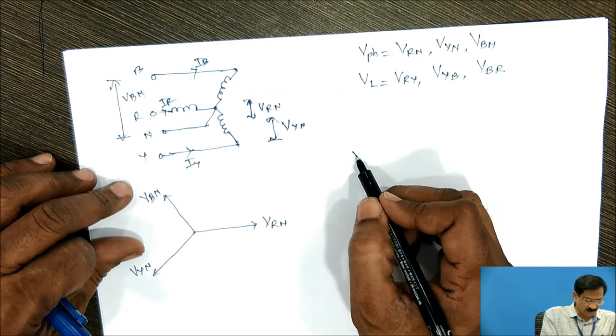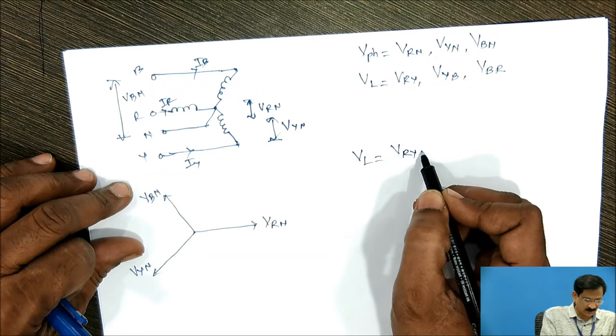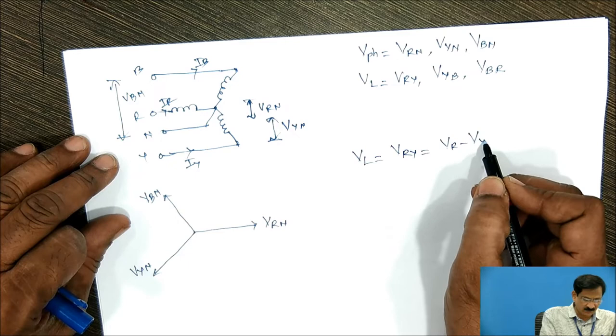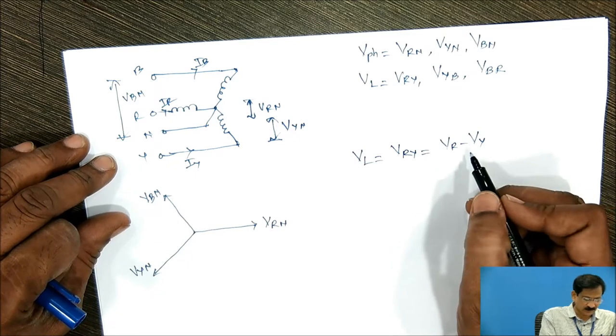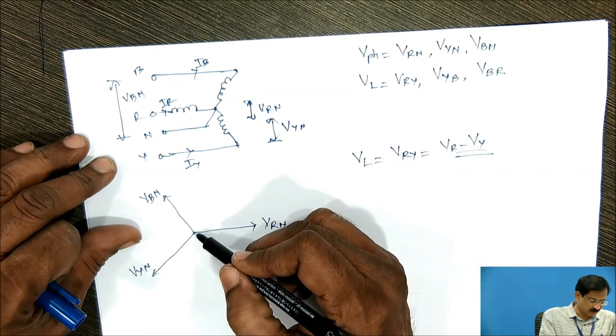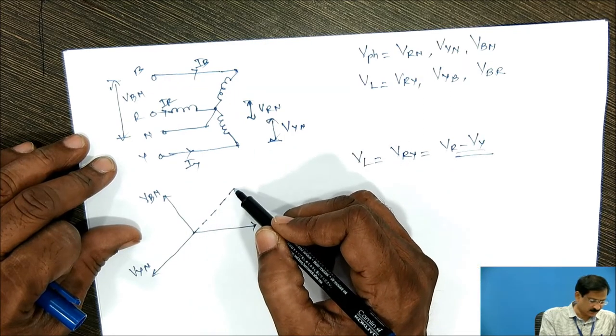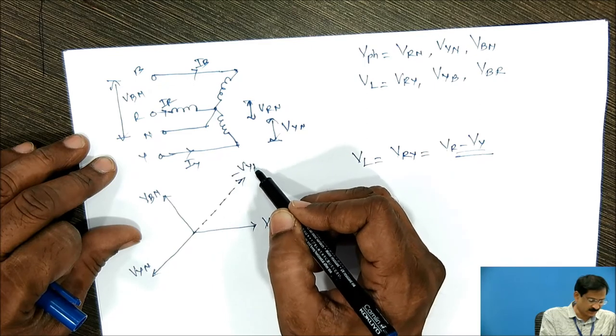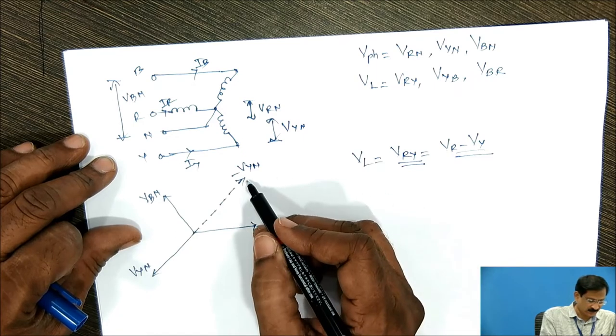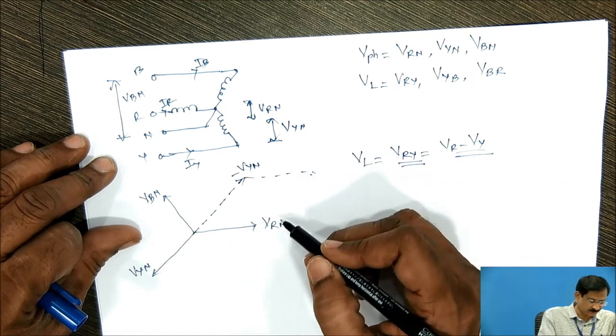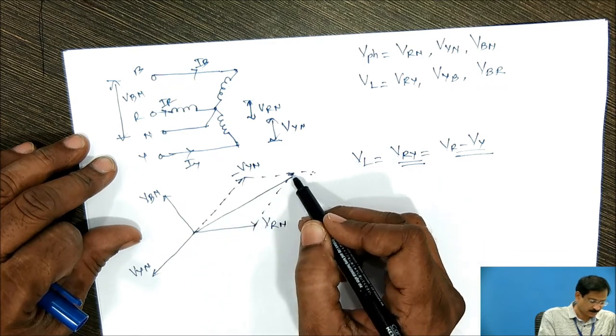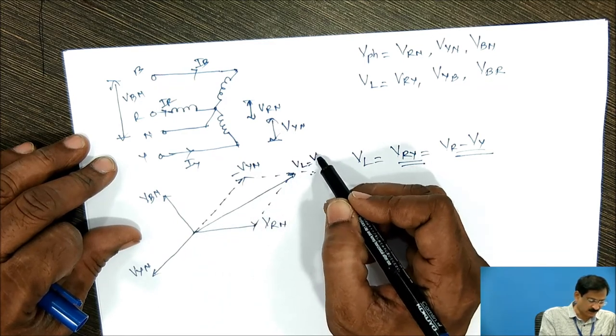It is required to find out the line voltage, for example VRY. VRY is equal to VR minus VY, minus VYN. For minus VYN, I will draw this being minus VYN. I will find out the resultant of these two vectors using parallelogram method. So this is line voltage VRY.